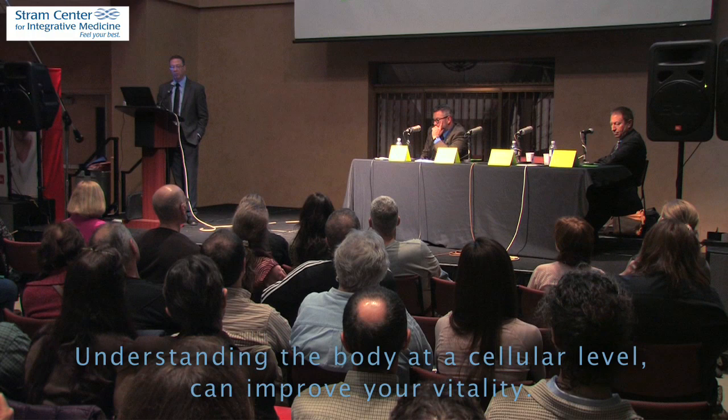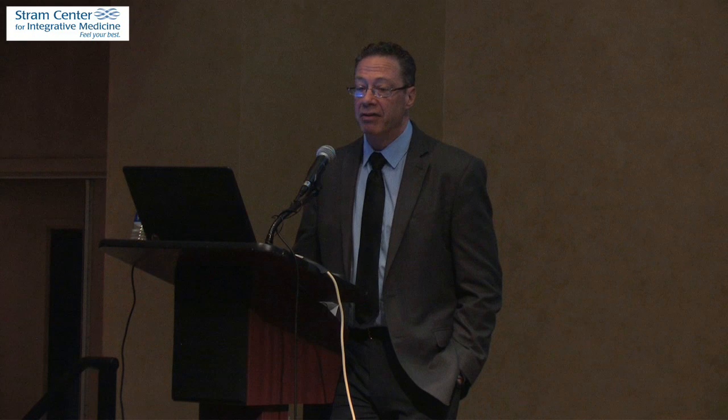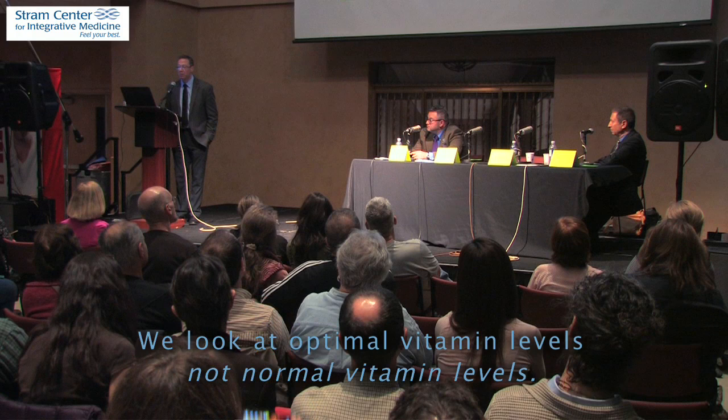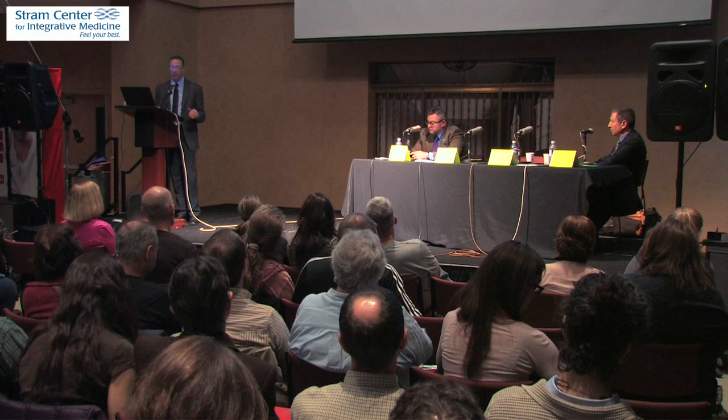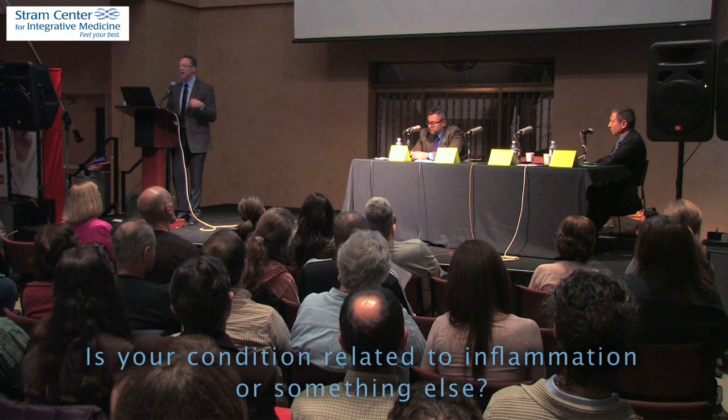So what do we look at? We look at nutritional status. Do you have optimal protein and albumin levels? Do you have optimal vitamin B levels, vitamin D levels? It's not just normal values. The normal value for vitamin D is above 30, but the optimal value we believe is above 60 to 80. We look at inflammatory markers to determine if your condition is related to inflammation versus something else.